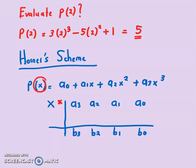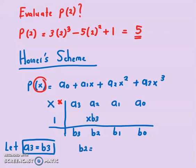So if you look at a₃, we let a₃ equals to b₃. This is how we start. To find b₂, b₃ times with x gives xb₃.